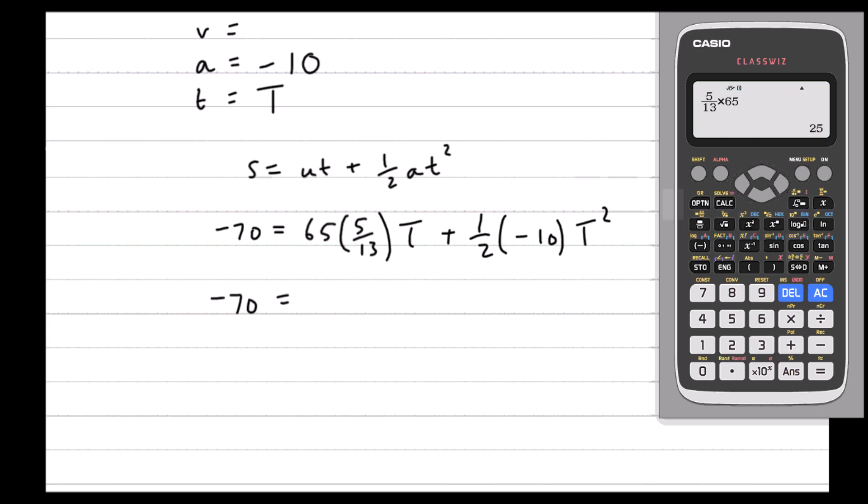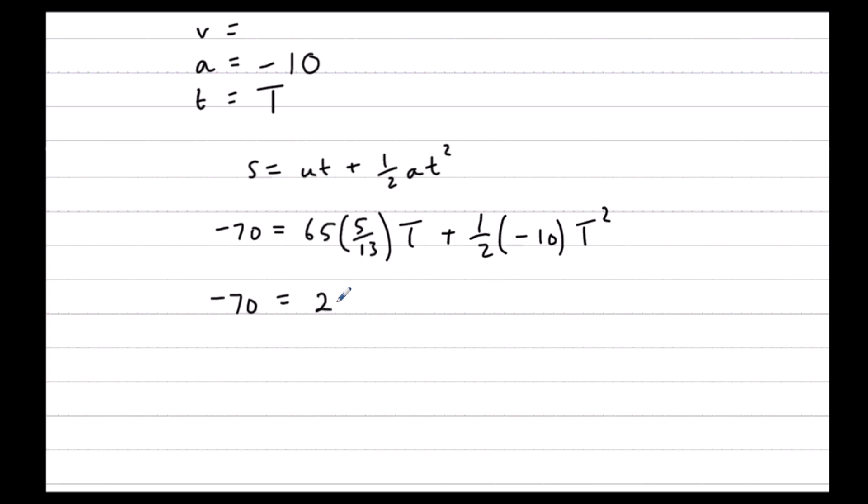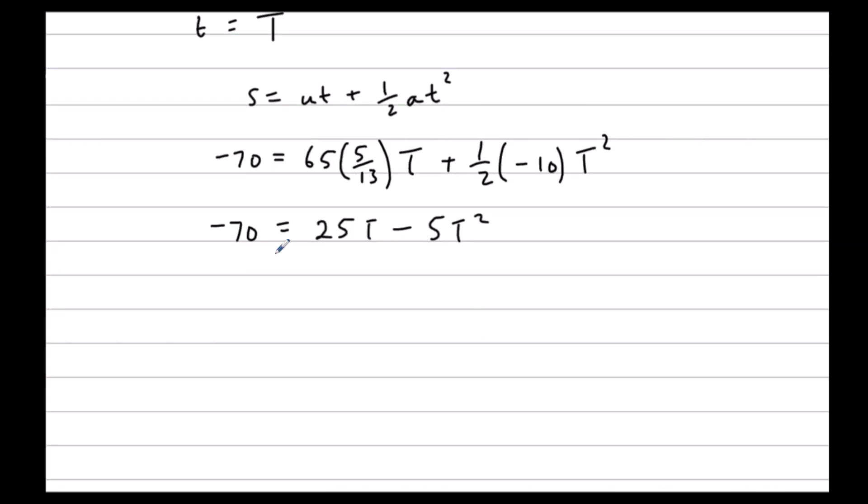T plus half AT squared. So negative 70 is 5 thirteenths times 65, which is 25. 25T minus 5T squared. So we've got a quadratic to solve. Let's make it equal to zero. 5T squared minus 25T minus 70 equals zero.